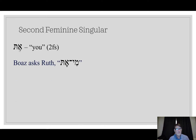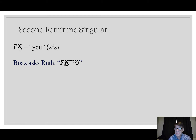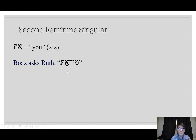Here, Boaz asks Ruth — remember this is a strange scene in the book of Ruth. Boaz is a little tipsy, he's asleep, he wakes up, and there's a woman at his feet. Feet can be a euphemism for something else, but anyway, he's startled. He says, mi at — who are you? Mi means who, and at is you, feminine singular. She says you're my next of kin, cover me with your skirt. It's a risque scene, but we're learning at — you, referring to a singular woman.